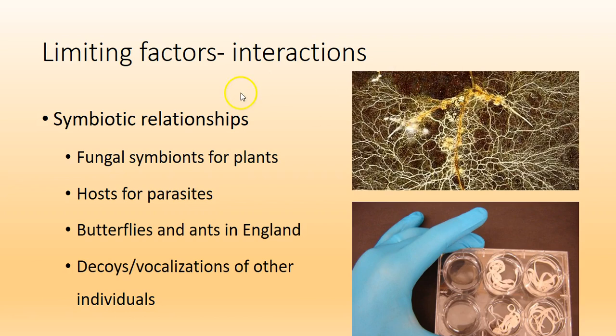Sometimes to have one species present you need another. Symbiotic interactions — which doesn't necessarily mean positive — include fungal symbionts for plants, like mycorrhizae where the fungus is on the outside of the plant and they help each other out. Parasites need hosts. There's also a species of butterfly in England that lays its egg next to an ant nest, and once the egg hatches the ants feed and protect the caterpillar. Also, sometimes you need some of a species present for others to come in — like putting a fake duck on a pond makes other ducks more likely to land because they see it's a safe space, so you might use decoys or vocalizations.